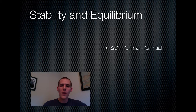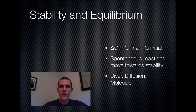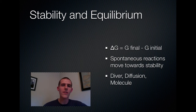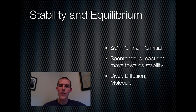Next topic is stability and equilibrium. Back to delta G — for any reaction, delta G, which is change in free energy, is the final energy minus the beginning energy. Spontaneous reactions move towards stability. A reaction that happens without any input of energy moves the reacting molecules from a place where they are unstable to a place where they are stable. Down at the bottom there you see three quick ideas: a diver, the process of diffusion, and a molecule.